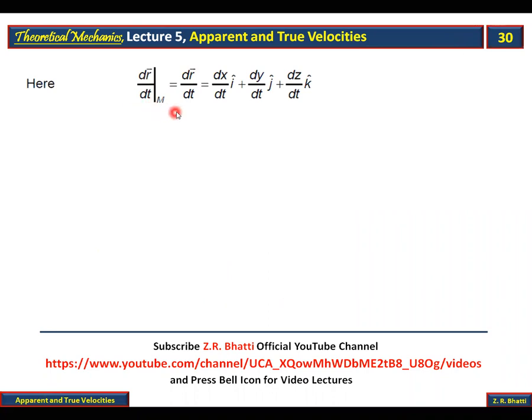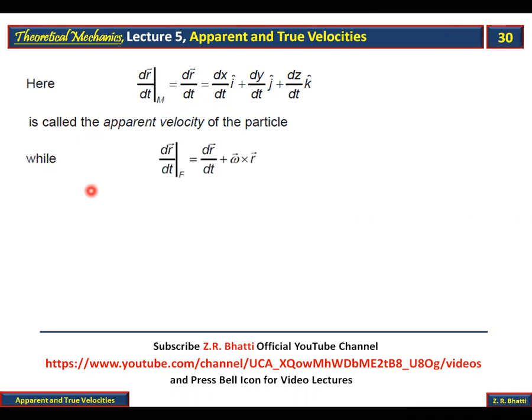DR/DTM is called the apparent velocity of the particle. It is the time rate of change of R as observed in the moving coordinate system. While DR/DTF, observed in the fixed coordinate system, is the true velocity of the particle.